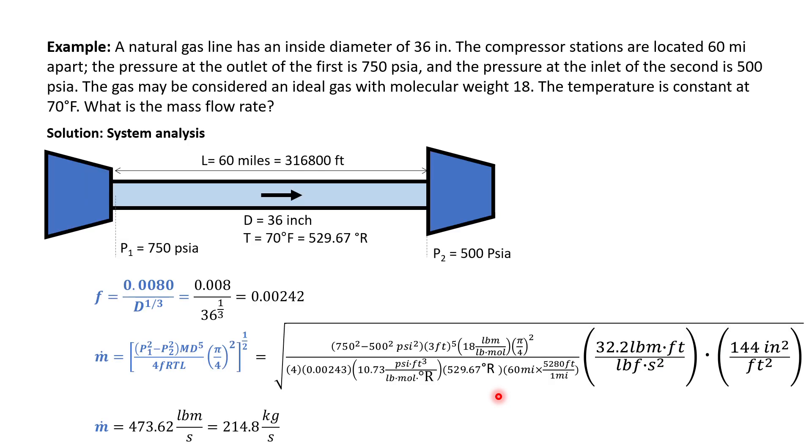Here is another example. A natural gas line has an inside diameter of 36 inch. The compressor stations are located 60 miles apart. The pressure at the outlet of the first is 750 psia and the pressure at the inlet of the second is 500 psia. The gas may be considered an ideal gas with molecular weight of 18 and the temperature is 70 degree Fahrenheit. What is the mass flow rate?